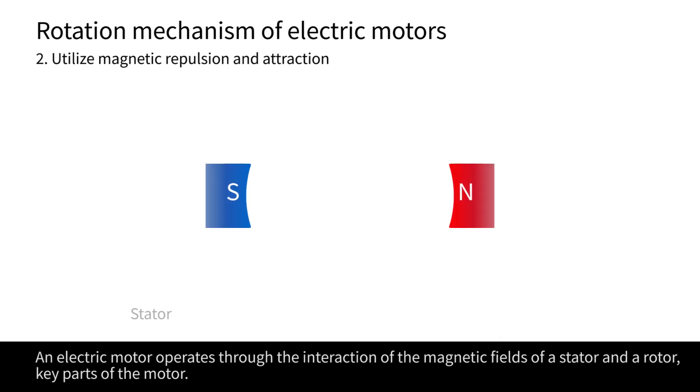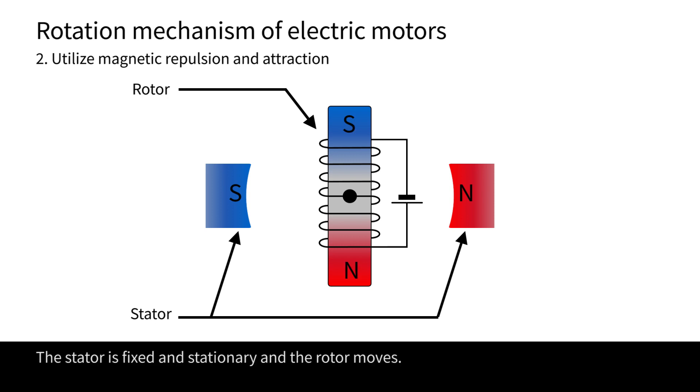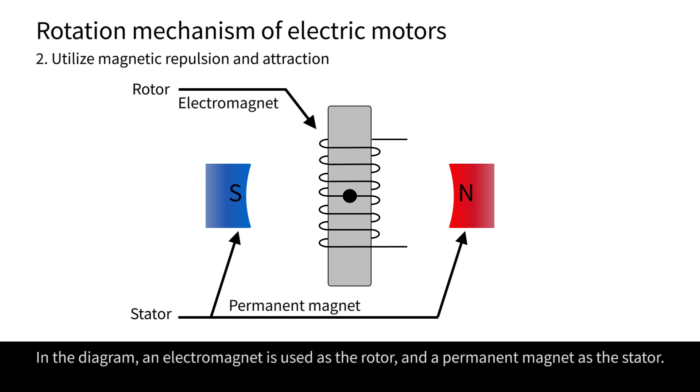An electric motor operates through the interaction of the magnetic fields of a stator and a rotor, key parts of the motor. The stator is fixed and stationary, and the rotor moves. In the diagram, an electromagnet is used as the rotor and a permanent magnet as the stator.